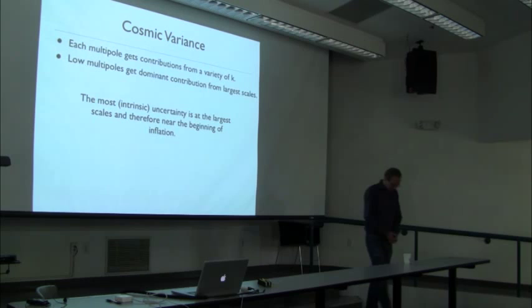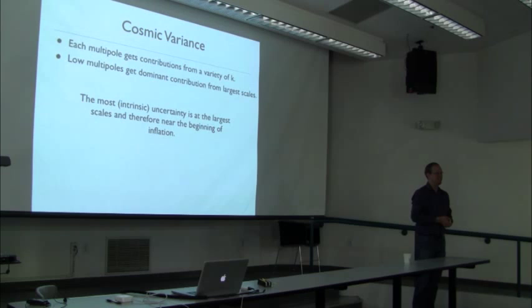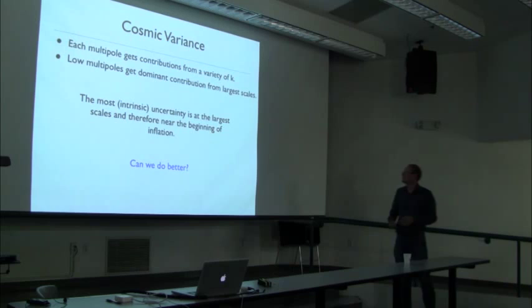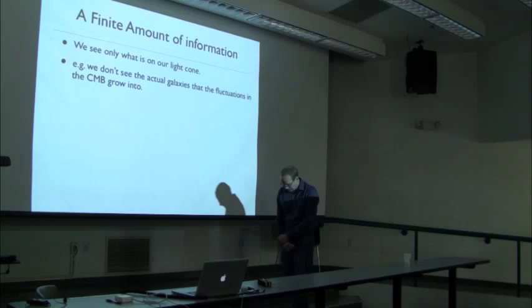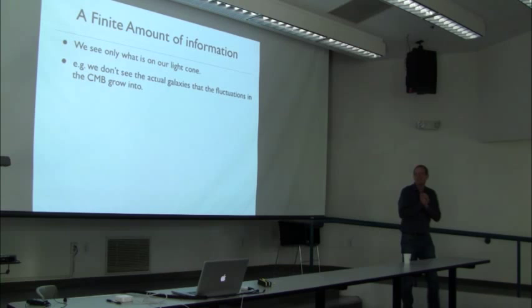The transfer function contains all the physics of how CMB photons go from when they were first released to when they reach your detector. Can we do better in principle? Let's not talk about practicality — just in principle. The first thing to note is that we only see what is on our past light cone.